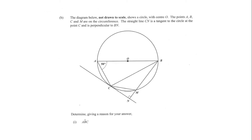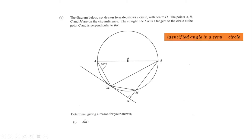Part B shows a circle with center O. The points A, B, C, and M are all on the circumference. The straight line CN is a tangent to the circle at point C, and it is perpendicular to DN, so a 90-degree angle is formed there.